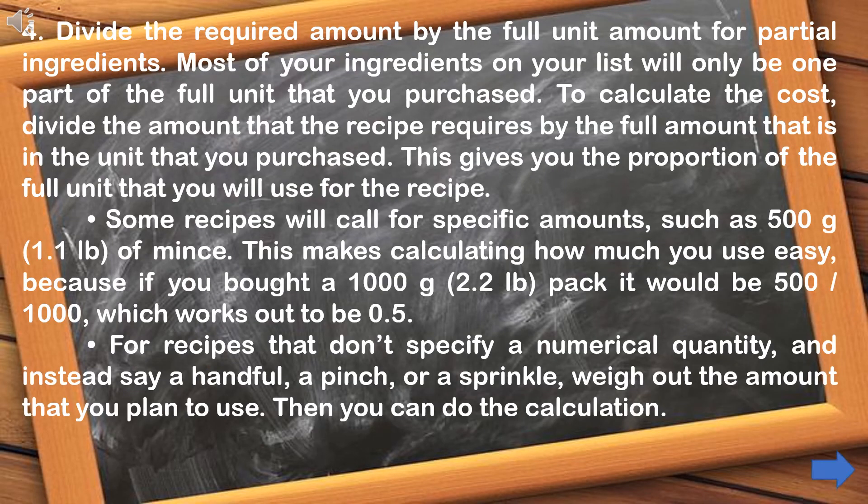Step number 4: Divide the required amount by the full unit amount for partial ingredients. Most of your ingredients on your list will only be one part of the full unit that you purchased.